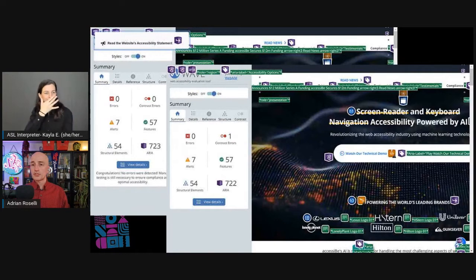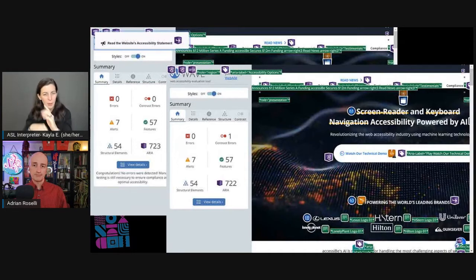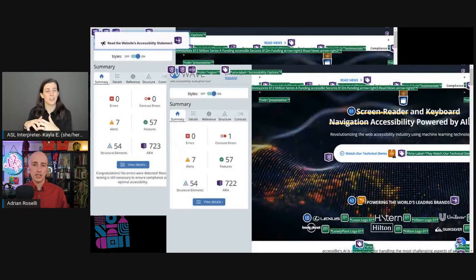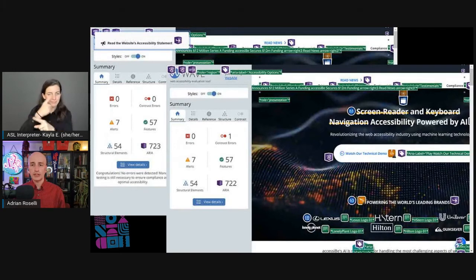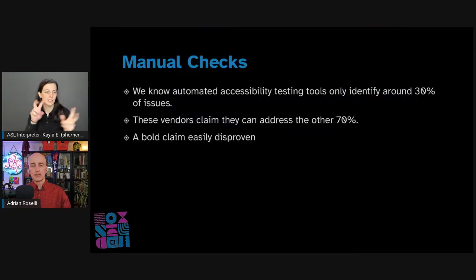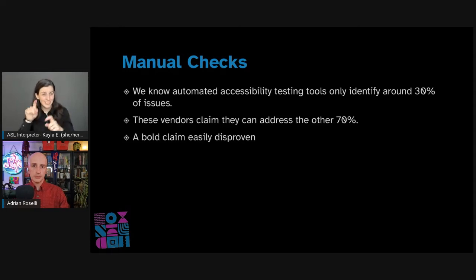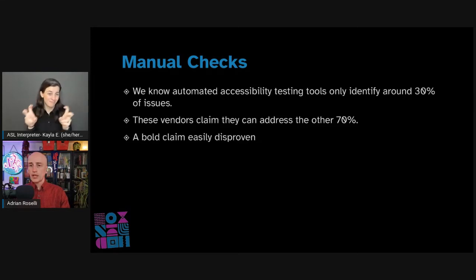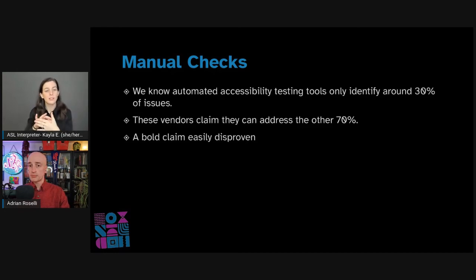I've written about my concerns that AccessiBe was spoofing WAVE. WAVE used to display a message: "The third-party AccessiBe integration on this page may temporarily modify content when WAVE is activated, resulting in interference with WAVE's detection of and accuracy identifying accessibility and compliance issues." We know that automated accessibility testing tools only identify about 30% of issues. Overlay vendors claim they can address the other 70%. That is a bold claim, and it is also easy to disprove.